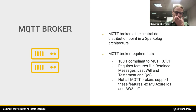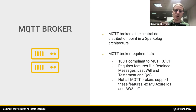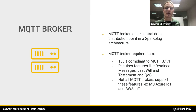For the MQTT broker, you need a 100% compliant MQTT 3.1.1 broker with features like retained messages, last will and testament, and quality of service. Be aware that cloud vendors like Microsoft Azure IoT and AWS IoT implement only a proprietary subset of MQTT, not the open standard — you cannot use them with Sparkplug. A key pitfall we've seen many times, so ask your vendor if they support the whole standard. You need a real MQTT broker; there are many commercial and open source options available.